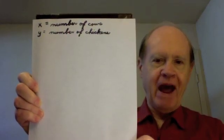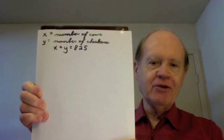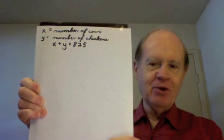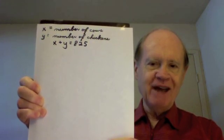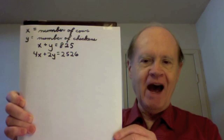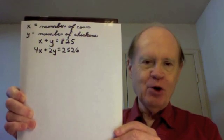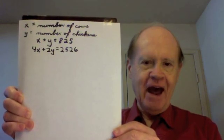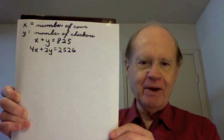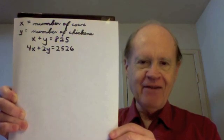I'm going to have x stand for the number of cows, and y stand for the number of chickens. We are told that he counted 825 heads, meaning there were 825 animals altogether, so the equation is x plus y equals 825. We are told that he counted 2,529 legs, three of those being the legs of the three-legged stool. Since a cow has four legs and a chicken has two, and subtracting three from 2529, we have the equation 4x plus 2y equals 2526.